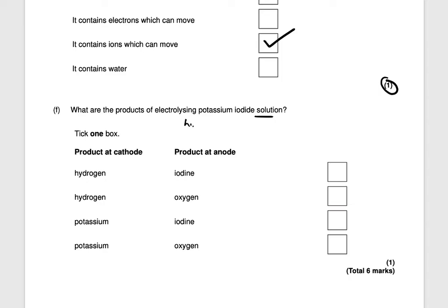What are the products of electrolyzing potassium iodide solution? Because it's in solution, we also have hydrogen ions (H⁺) and hydroxide ions (OH⁻). At the cathode, we'd normally get copper, silver, or gold, but since potassium is more reactive than hydrogen, hydrogen gas is produced instead. At the anode, iodide is a halogen (group 7), so iodine is produced. The products are hydrogen and iodine.